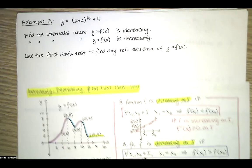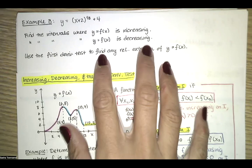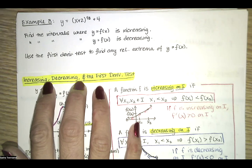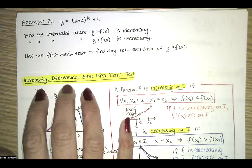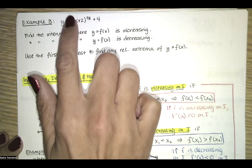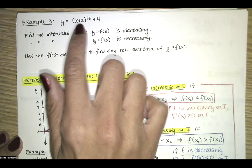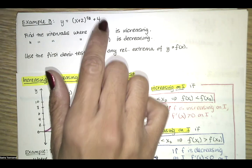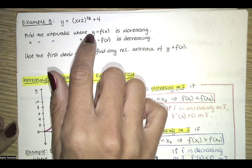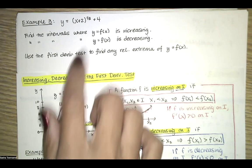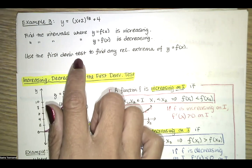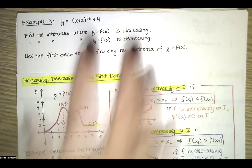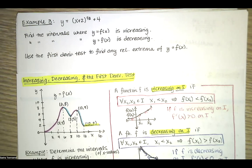In this video, we work example three from our section on increasing and decreasing functions and intervals where functions are increasing or decreasing and the first derivative test. Here's our function: y equals x plus two to the one-third power, or the cube root of x plus two, plus four. We want to find the intervals where the function is increasing and decreasing, then use the first derivative test to find any relative extrema. I'll probably do examples three and four in this video.